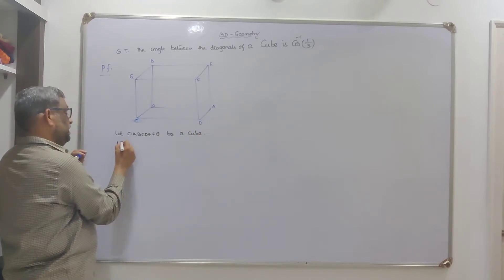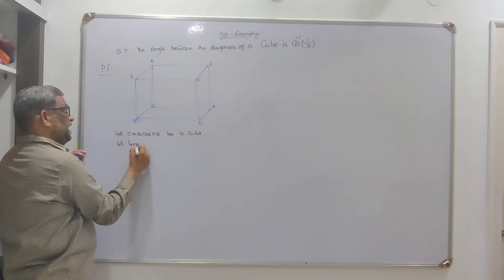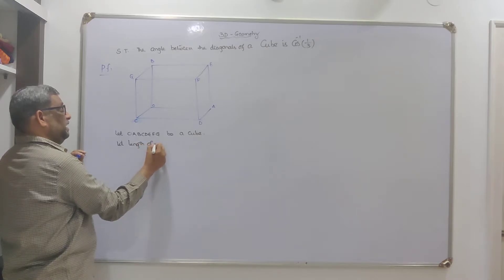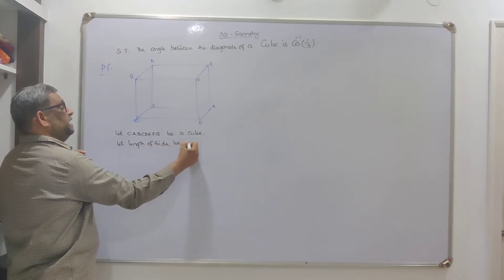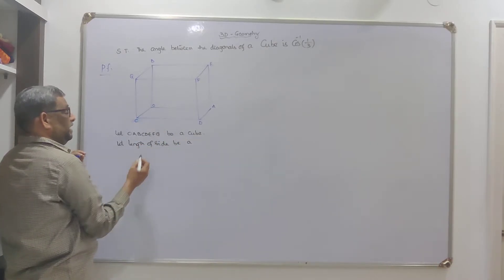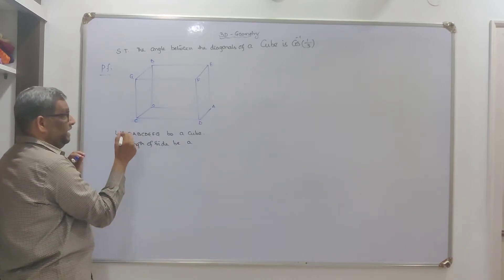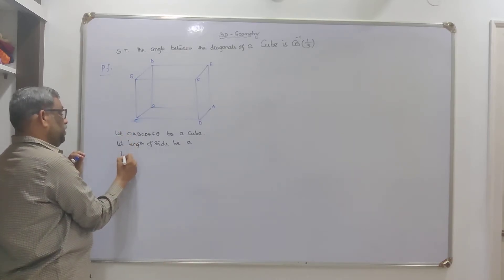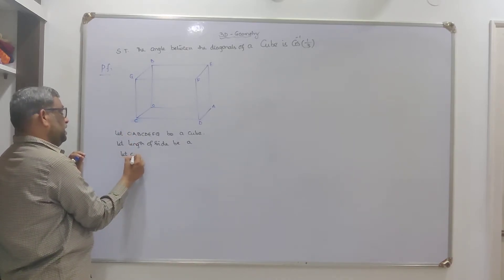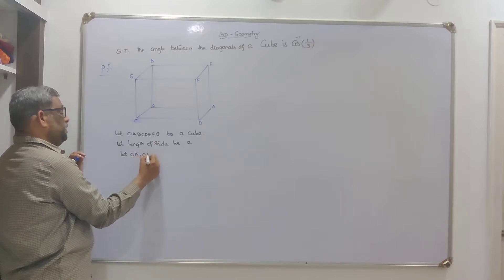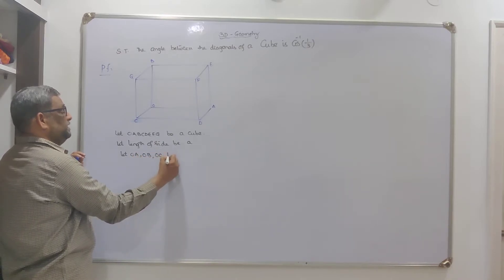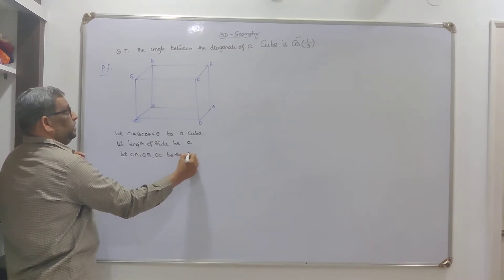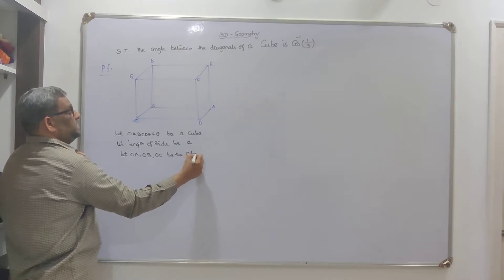Let the length of side be 'a'. Let O, A, O, B, O, C, B, D be the edges of the cube, each of length 'a'.